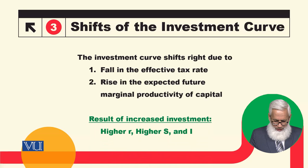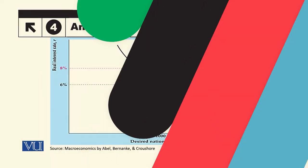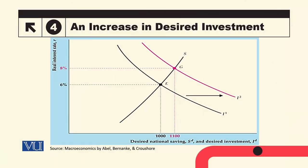Initially, the investment curve was I1 with equilibrium at point E. When the marginal product of capital increases or any other factor causes an upward shift in investment, the new equilibrium point is G, with a higher interest rate and a higher equilibrium level of investment and saving.